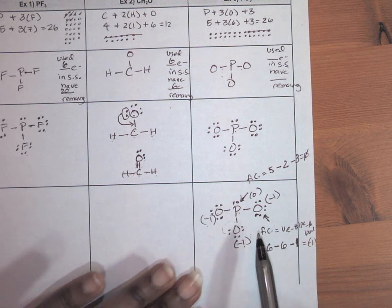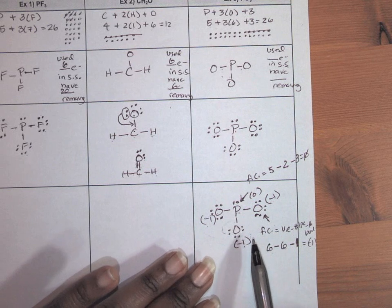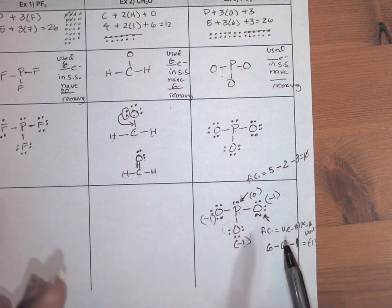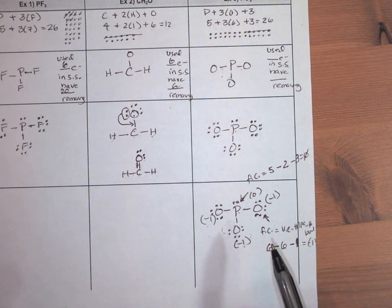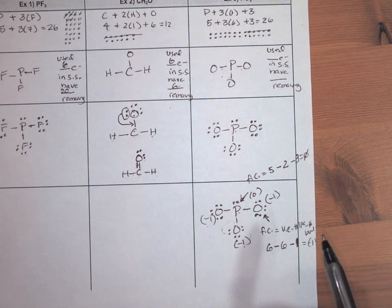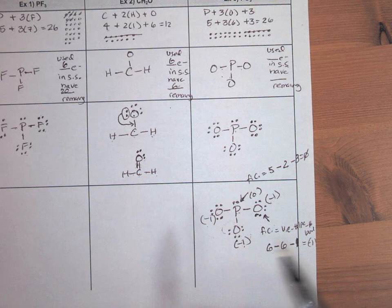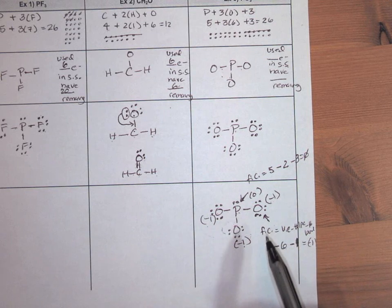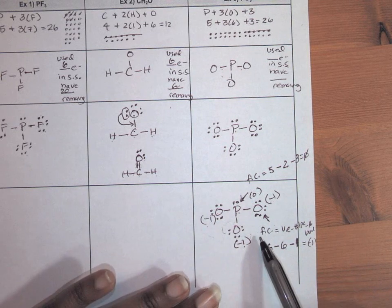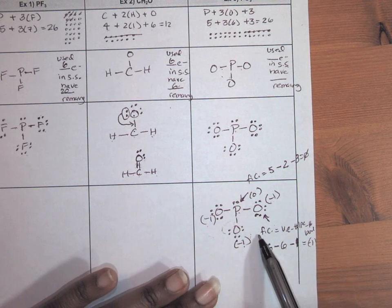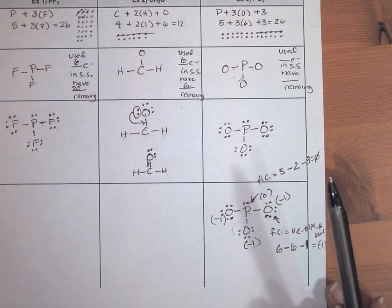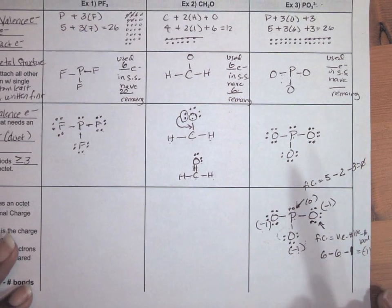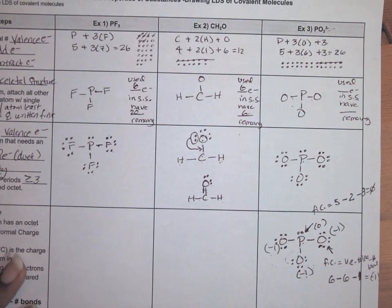This is an example of when formal charges come into play. If you have structures where formal charges are not all zero, you should check if there's a better structure. In this case, we don't have a better structure. I hope you found this video helpful — have a quality day!